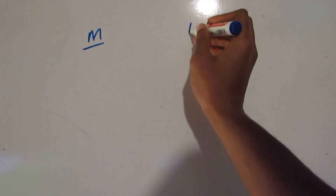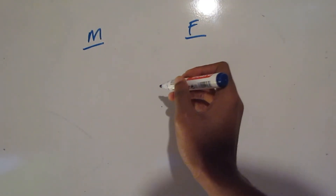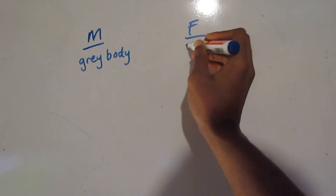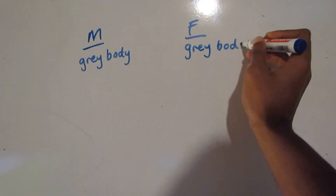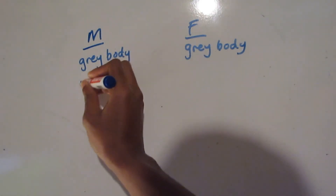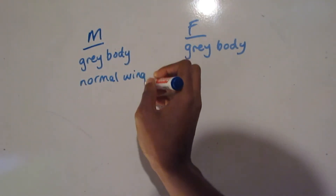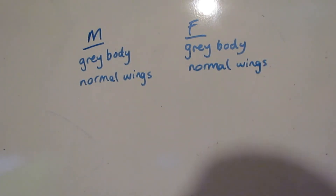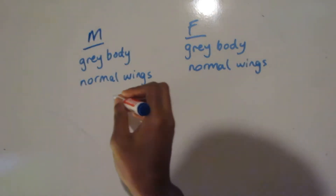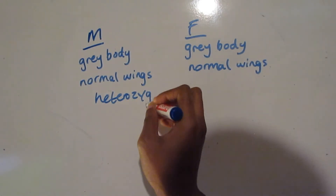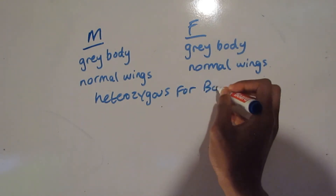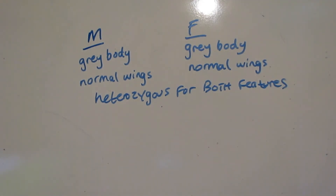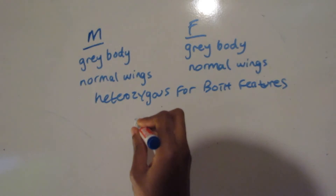We're going to perform a cross of two fruit flies and see what the outcomes are. We're going to take a gray body male and female, both with normal-sized wings. These flies are going to be heterozygous for both features, so the genotypes for both parents are capital G, lowercase g, capital N, lowercase n.